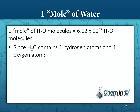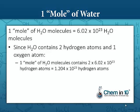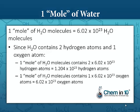Since H₂O water contains two hydrogen atoms and one oxygen atom — two hydrogen atoms because of that subscript 2 following the H — we know that a mole of water molecules contains two moles of hydrogen atoms, or 2 times 6.02 times 10 to the 23rd hydrogen atoms, which equals 1.204 times 10 to the 23rd. And one mole of water molecules contains only one mole of oxygen atoms, so that would be 6.02 times 10 to the 23rd oxygen atoms.